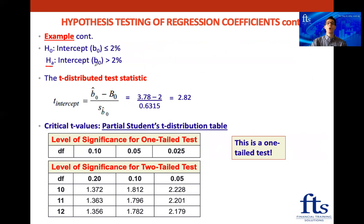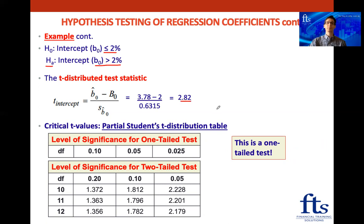Starting with the alternative hypothesis: we want to support that the intercept is greater than 2%. The null hypothesis is that it is less than or equal to 2%. To calculate the test statistic, we take the estimated intercept, subtract the hypothesized value of 2%, divide by the standard error, and we get 2.82.